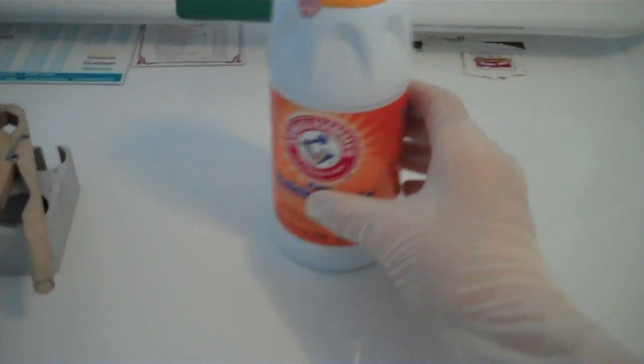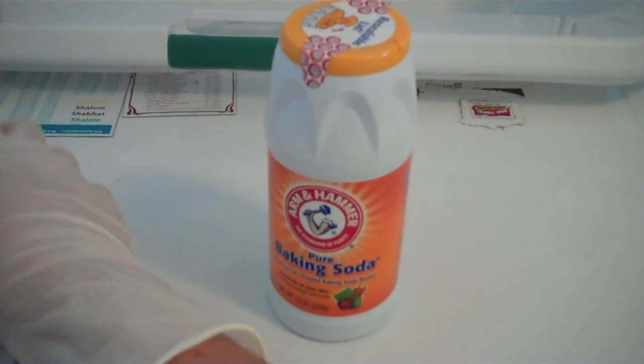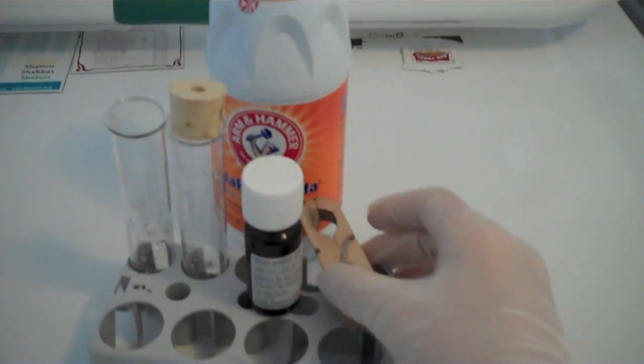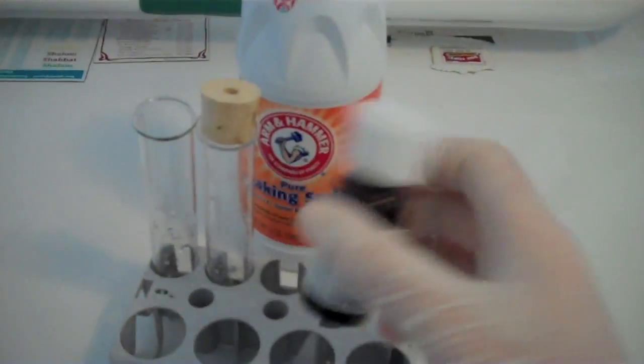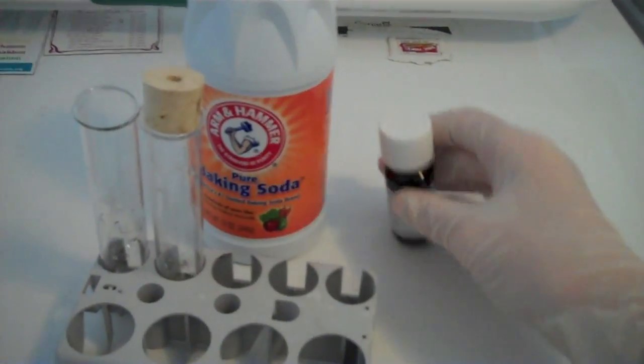Today I will show you how to make sodium carbonate. For this you need sodium hydrogen carbonate, which is baking soda, two test tubes, and optional is some litmus solution.